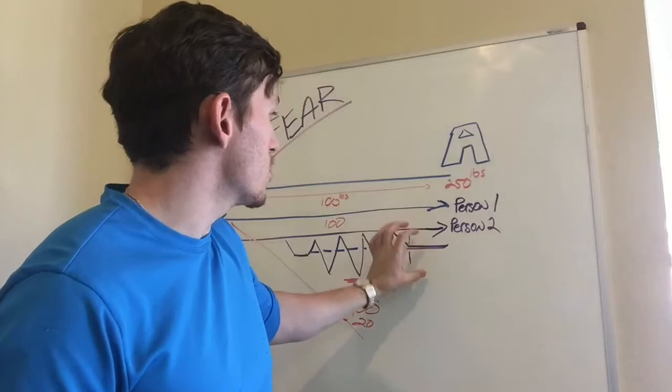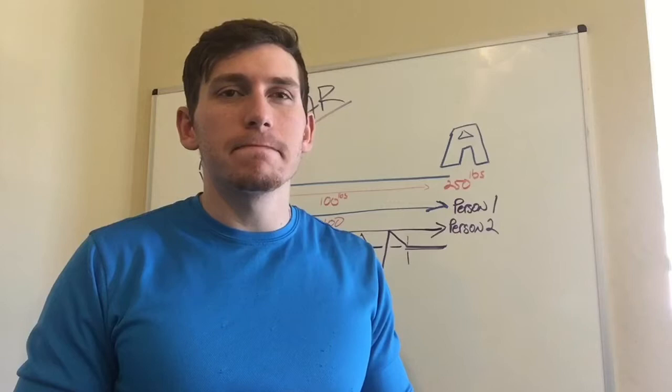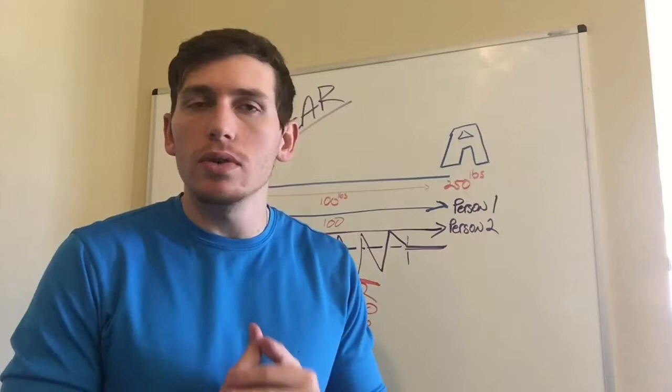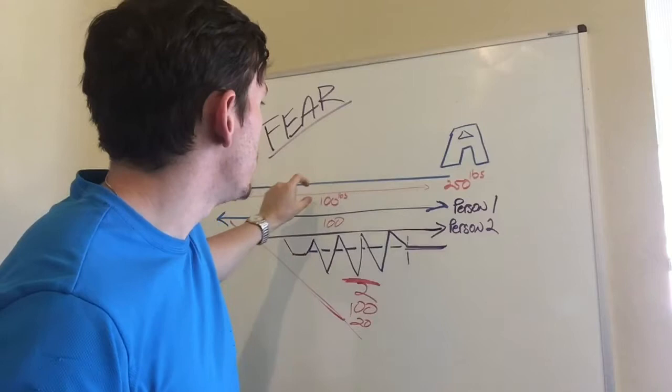And so I encourage you to start making that paradigm shift from person two to person one. Don't stop until it's done. Believe in yourself. Get rid of the negative thoughts. Get rid of the negative emotions behind a goal like this, a 100 pound goal. It's easy when you simplify. So I hope this helped you. I don't want to make this video too long. Transition from person two to person one by getting rid of fear. Don't stop until it's done.